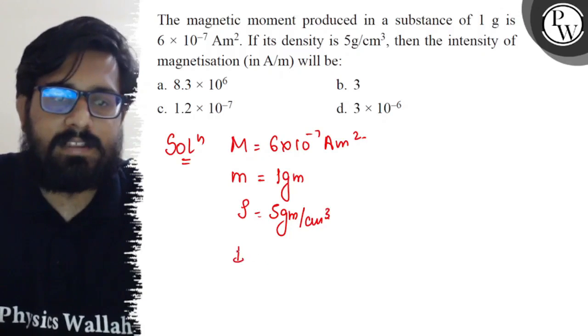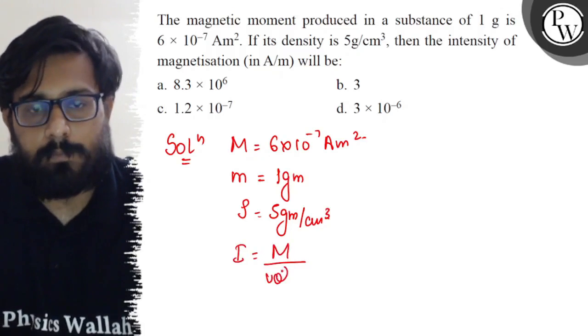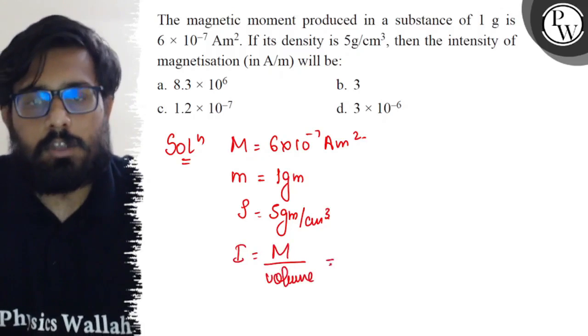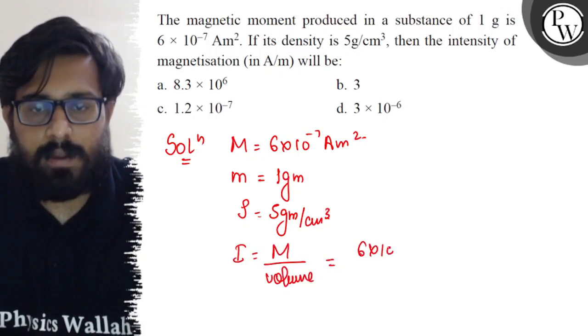We need to find the intensity of magnetization, which equals M divided by volume. So the value is 6×10^-7 divided by volume.